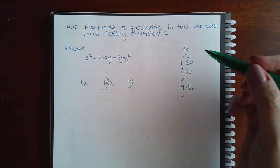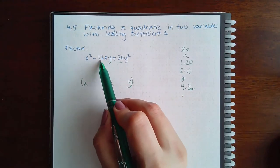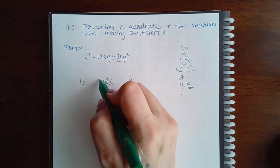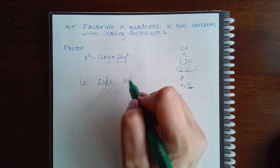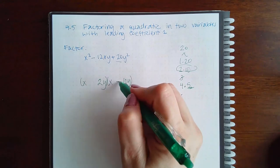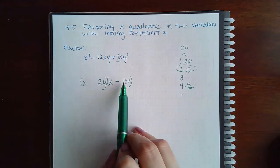Now which of these will add to give me 12? 2 and 10 will add to give me 12. So 2 and 10. The bigger number has to be negative, and if I want these to multiply to give me a positive, this one also has to be negative. So then this is the factorization.